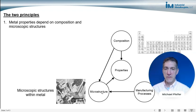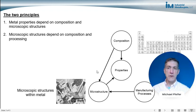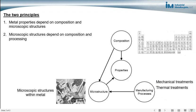The second fundamental principle is that the microscopic structures present in metals depend on the metal's composition and the processing of the metal—how the metal was processed. This includes mechanical treatments such as cold rolling and drawing, and thermal treatments including heat treatments. There are also thermomechanical treatments such as hot rolling.